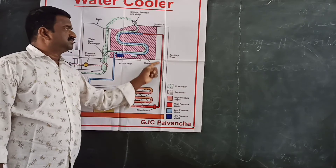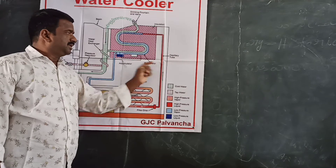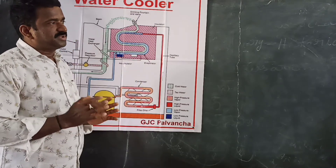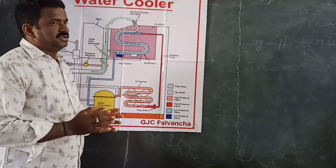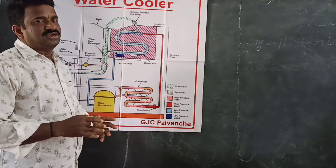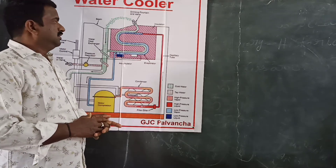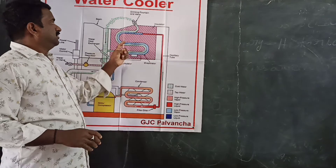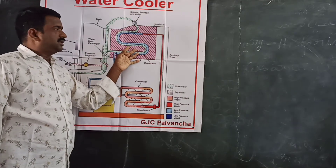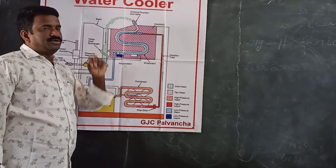The next step is to make the capillary tube. The capillary tube is called the expansion device. The pressure will be given to the expansion device. The evaporation pressure is higher than the capillary tube.